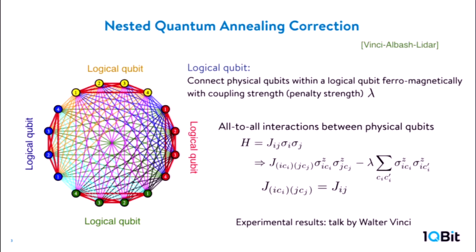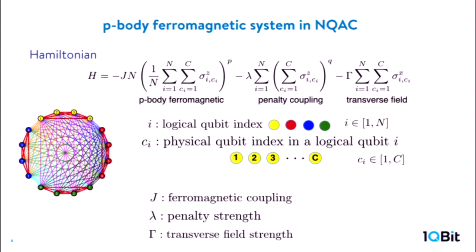In nested quantum annealing correction, we first make a logical qubit by using several physical qubits. Each logical qubit consists of multiple physical qubits, and we connect the physical qubits ferromagnetically. We denote the coupling strength by lambda. We then connect the logical qubits based on this coupling strength, embedding the all-to-all interaction to describe the interaction.